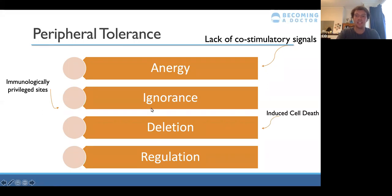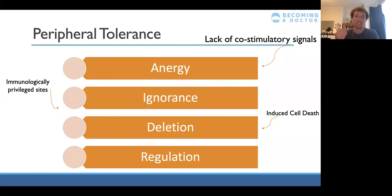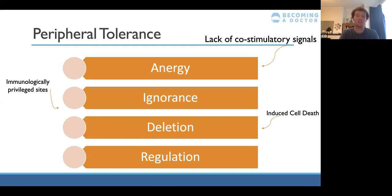Third, deletion — if a cell manages to get through central tolerance and binds too strongly to a self-antigen presented by an antigen presenting cell, it will upregulate the Fas ligand, which is the death receptor. High Fas ligand expression on the cell surface leads to cell death. So if a cell gets through central tolerance, it induces its own death when it binds to self MHC1, preventing damage to other cells.